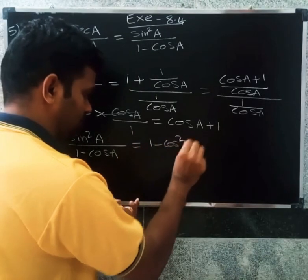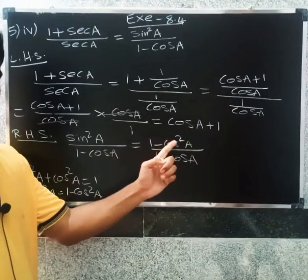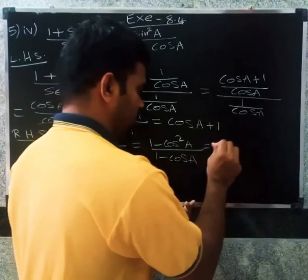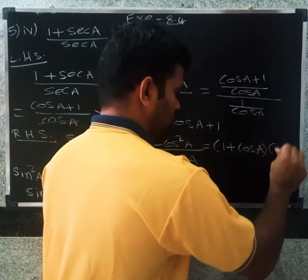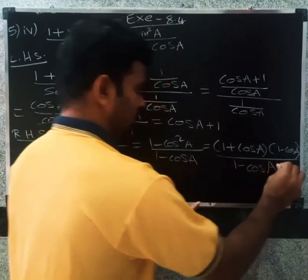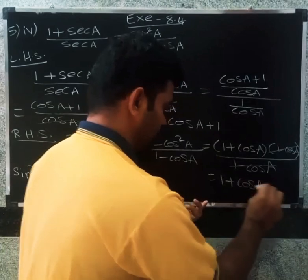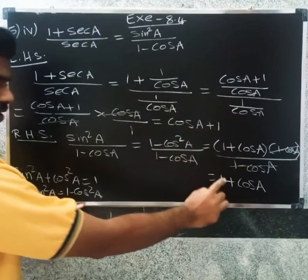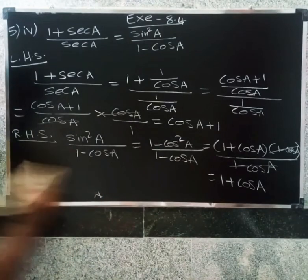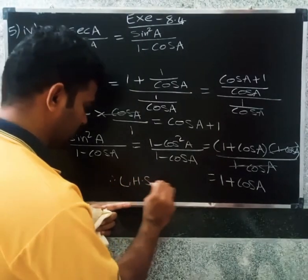We apply the formula a² minus b² equals (a + b)(a − b). Here a equals 1 and b equals cos A, so sin²A equals 1 minus cos²A equals (1 + cos A)(1 − cos A). Dividing by (1 − cos A), the (1 − cos A) terms cancel, leaving 1 plus cos A. Therefore LHS equals RHS.